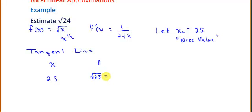And then our f prime value, which is 1 over 2 times the square root of 25, which is 1 over 2 times 5, one-tenth, or 0.1.